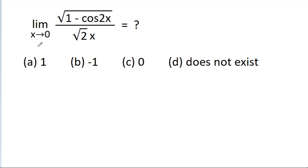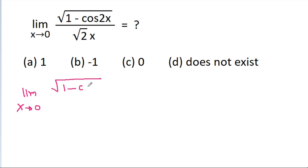In this video, we have to find the limit as x tends to 0 of the square root of (1 − cos 2x) divided by root 2 times x.